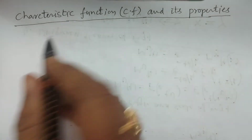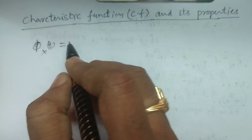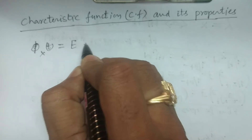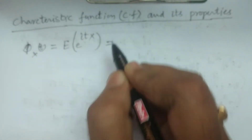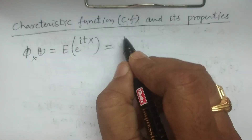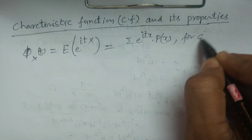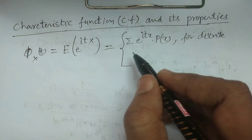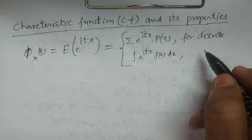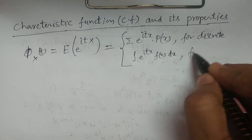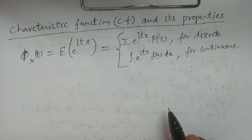Now we discuss what is characteristic function. It is denoted by phi_x(t) and it is defined as the expectation of e^{itx}, where i is an imaginary value. This is equivalent for both discrete and continuous cases. For discrete, it is defined as summation of e^{itx} · p(x). For a continuous random variable, it is the integral from minus infinity to infinity of e^{itx} · f(x) dx.